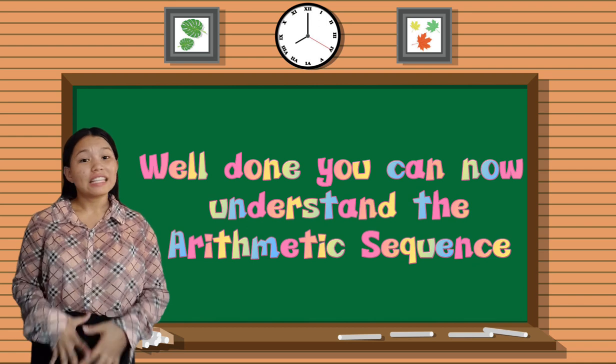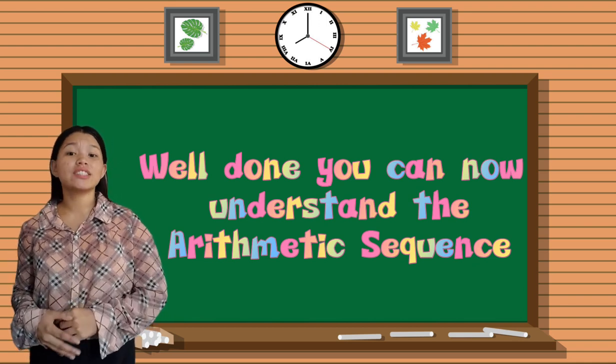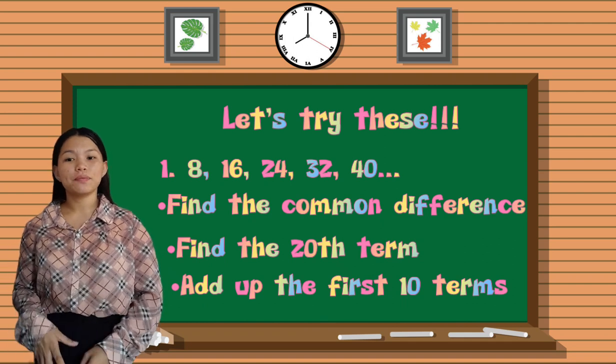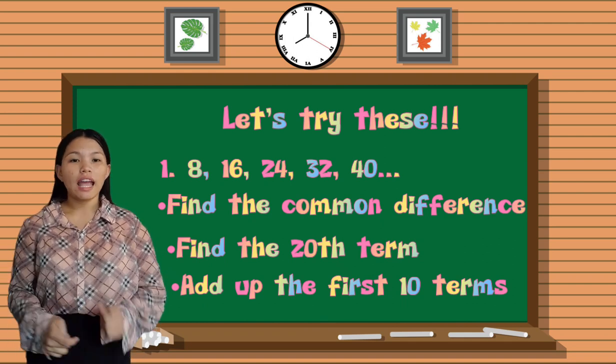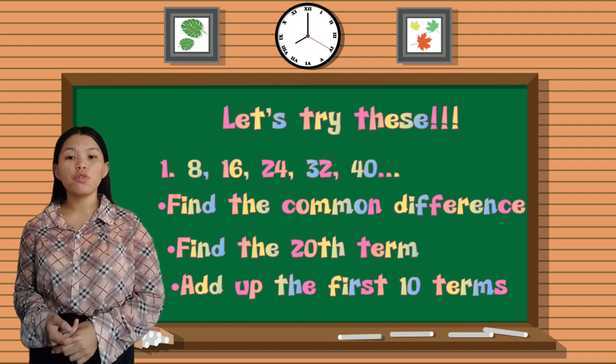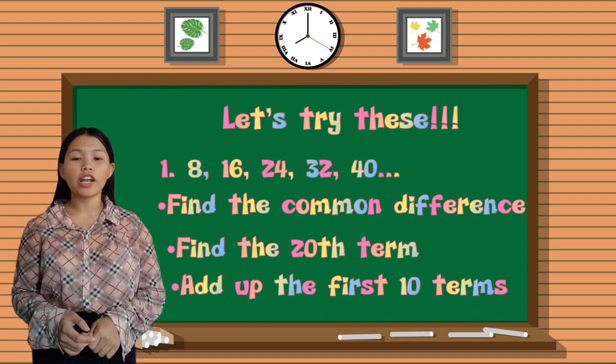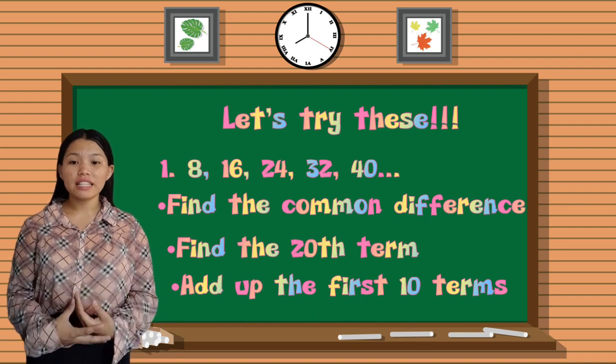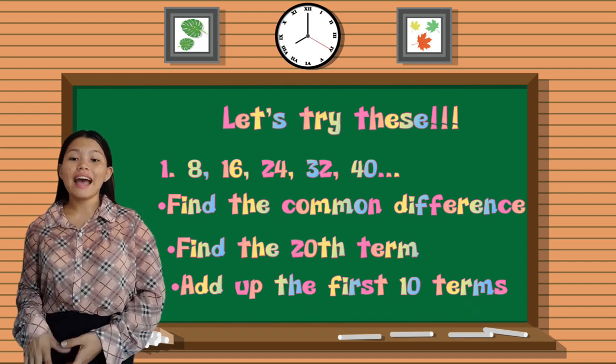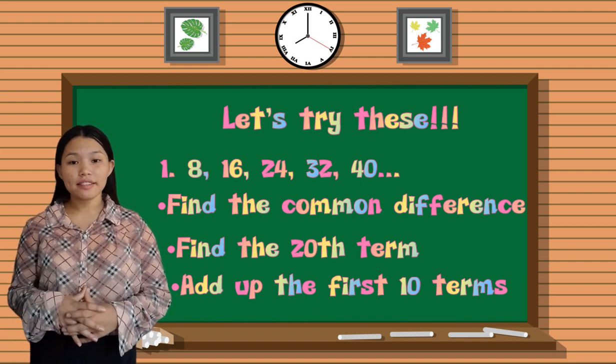Well done. You can now understand the arithmetic sequence. So let's try these. Number 1: 8, 16, 24, 32, 40, and so on. Find the common difference. Find the 20th term. And lastly, add up the first 10 terms.